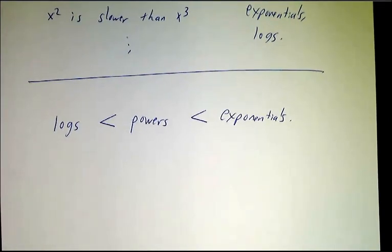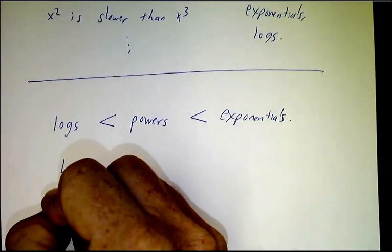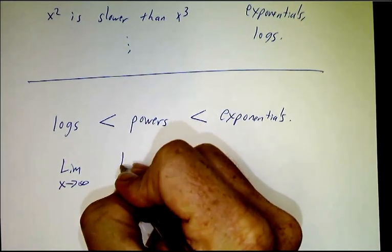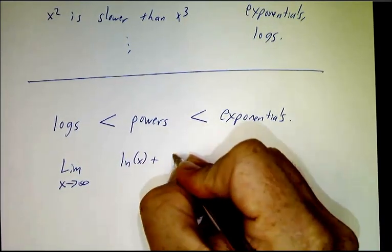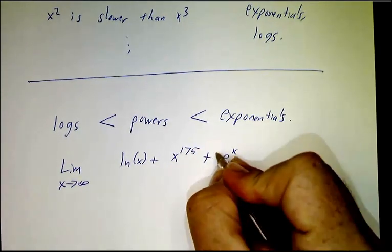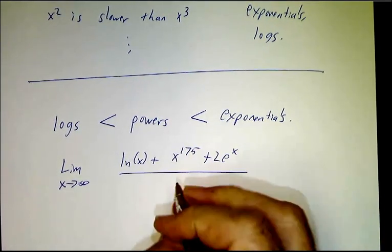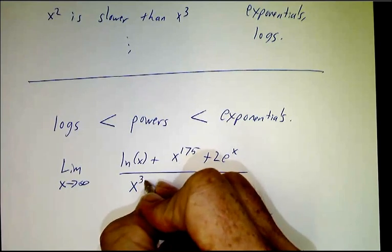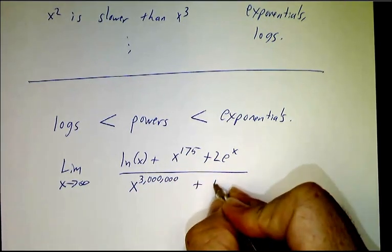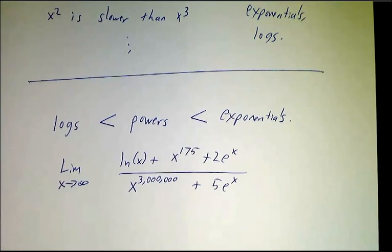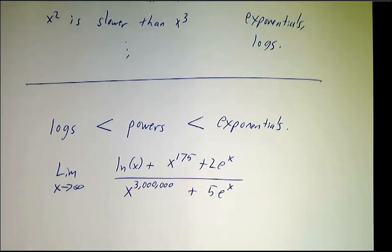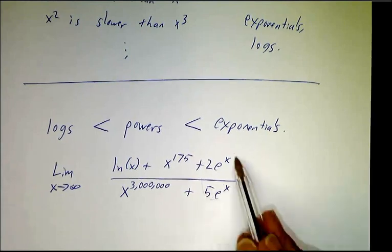So if I gave you a limit as x goes to infinity of natural log of x plus x to the 175th plus 2e^x over x^3,000,000 plus 5e^x, you'd say, you know, these are all going to infinity. But the thing that's growing the fastest is the e^x term.